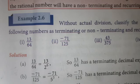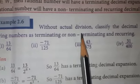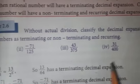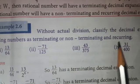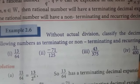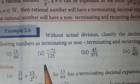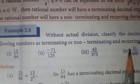Good afternoon students. Today we are going to see Example 2.6 on page number 51. The question is: without actual division, classify the decimal expansion of the following numbers as terminating or non-terminating and recurring. The question is given in fraction format, and we should find — without actual division — whether it is terminating or non-terminating and recurring.